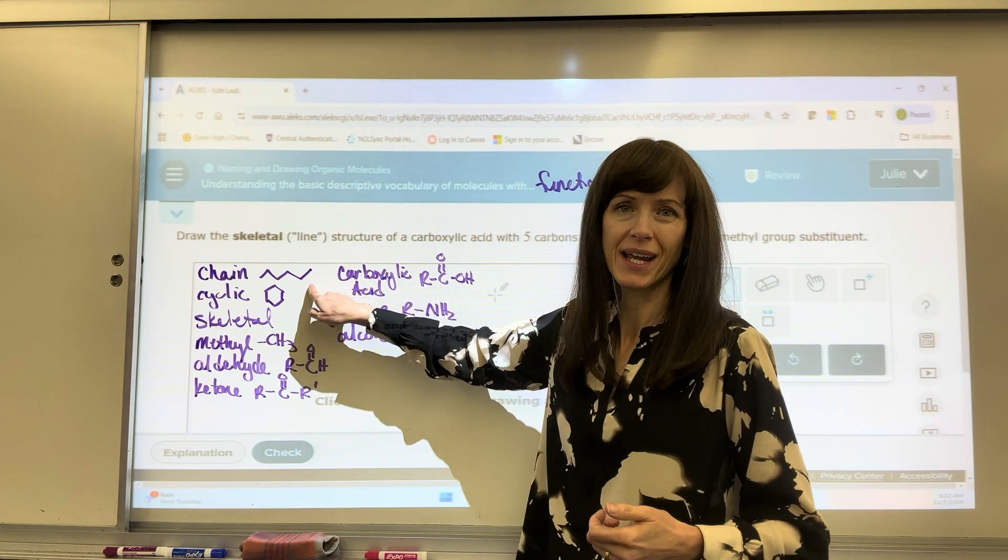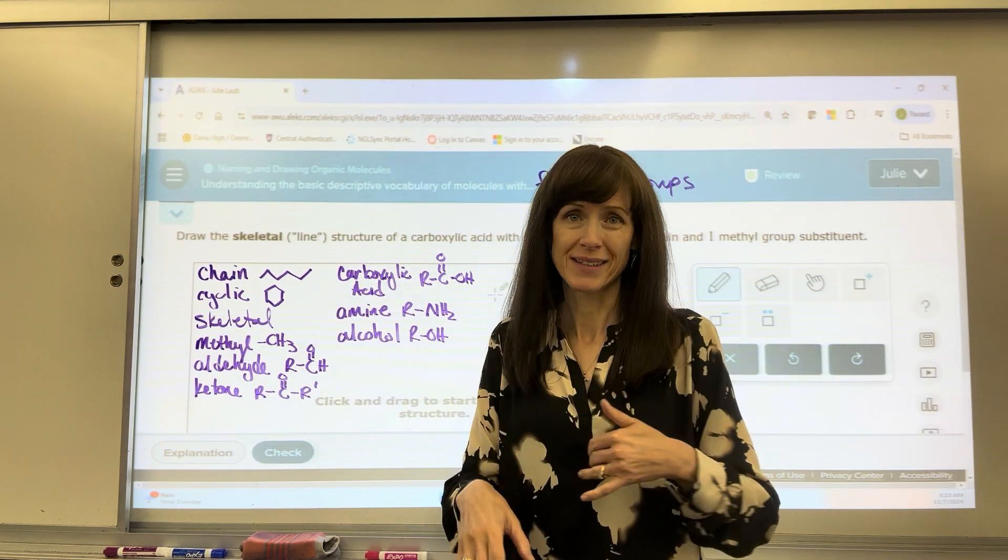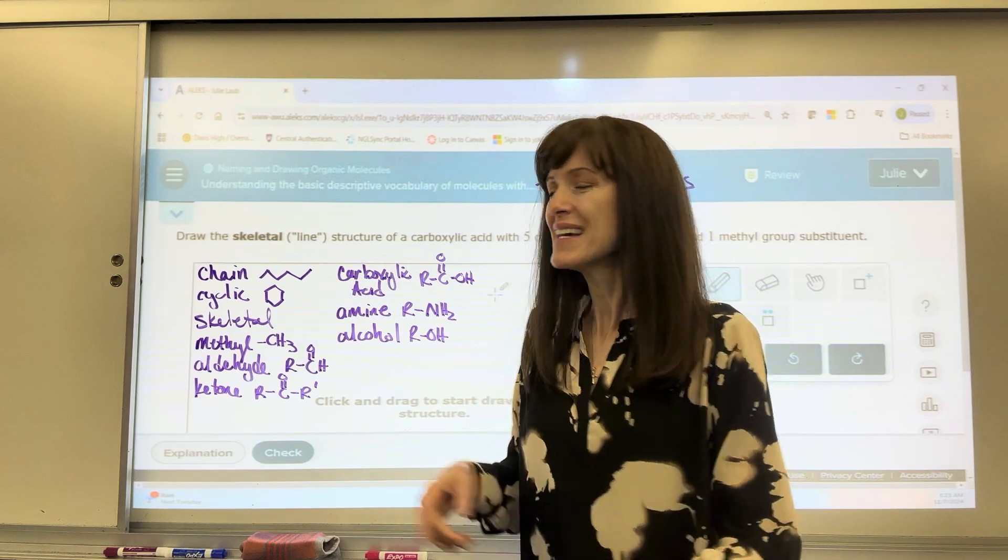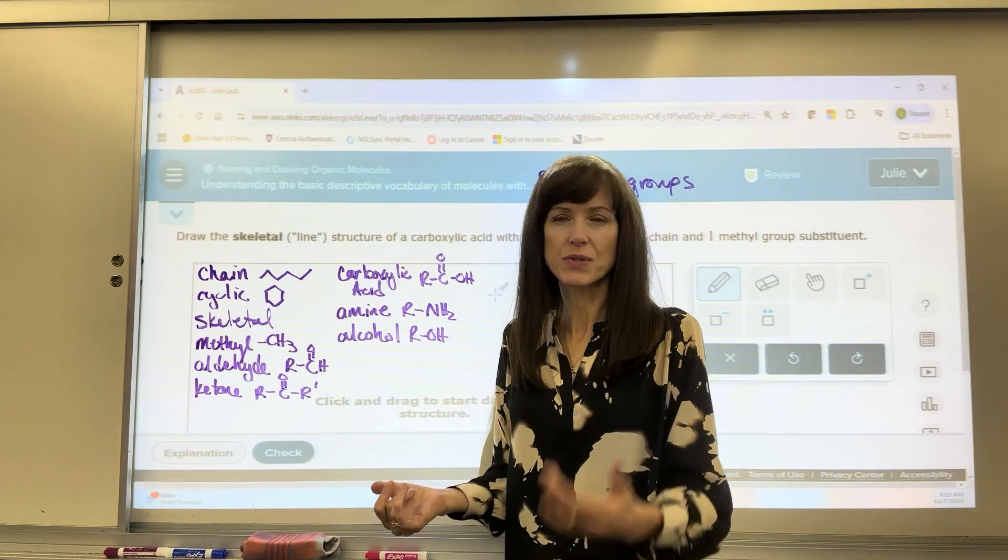When they use the word chain, remember that is a string of carbons bonded together. So a cyclical compound is going to be when we take that chain and we wrap it around on itself, almost like making a circle.